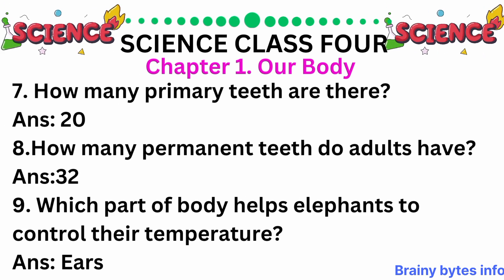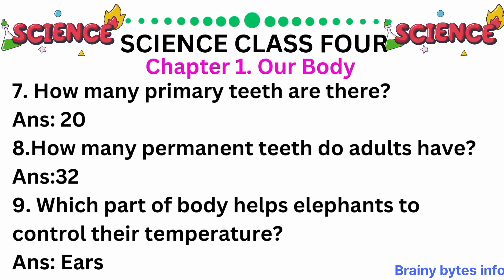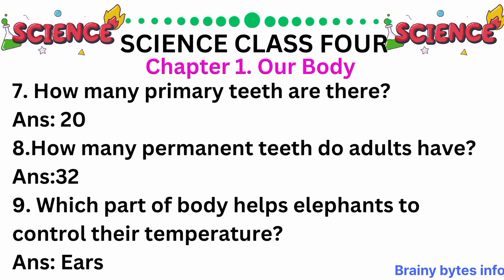How many primary teeth are there? 20. How many permanent teeth do adults have? 32.